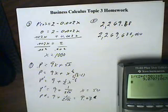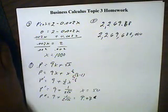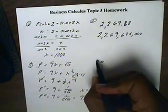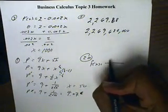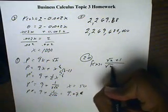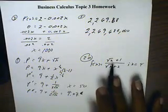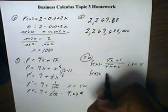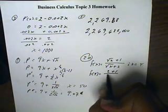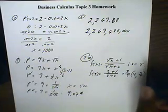Next we want to look at number 20 — actually this is number 21. We have f of x equals the square root of x plus 1, all over the square root of x plus 2, and x equals 4. We want to find the linear equation that is tangent to this line at x equals 4. So we need a point and a slope. To find the point, we put 4 in for x. That gives us the square root of 4, which is 2, plus 1, over 2 plus 2, which gives us 3 fourths. So our point is (4, 3/4).